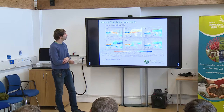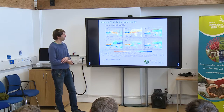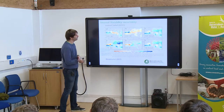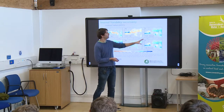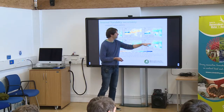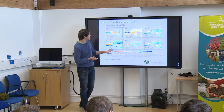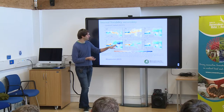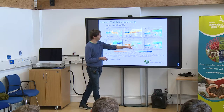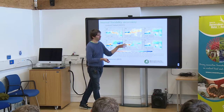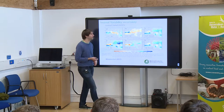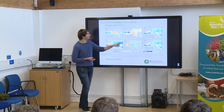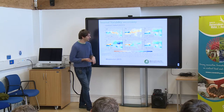Looking at the central Sahel from August to October, we have the same behavior: the forced response is leading to more precipitation. In one member, we have a strong increase in precipitation because the internal climate variability is exacerbating the change in precipitation. In another member, at the opposite, we have a decrease in precipitation.